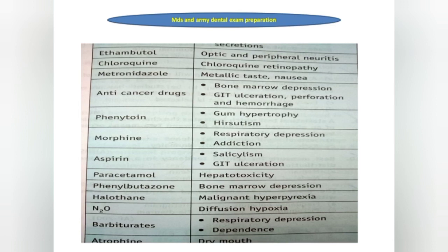Anticancer drugs — bone marrow depression, GIT ulcers, perforation and hemorrhage. Phenytoin — gum hypertrophy or hirsutism. Morphine — respiratory depression and addiction. Aspirin — salicylism, GIT ulcers. Paracetamol — hepatotoxicity. Phenylbutazone — bone marrow depression. Halothane — malignant hyperpyrexia. N2O — diffusion hypoxia. Barbiturates — respiratory depression and dependence. Atropine — dry mouth.